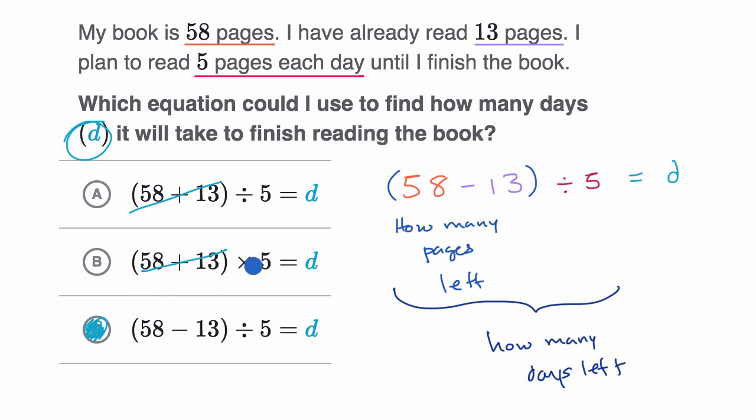It would also not make sense to multiply by five because it's not going to take you five times more than the number of pages to read the book. You're going to divide by five. You're reading five pages every day. And we are done.